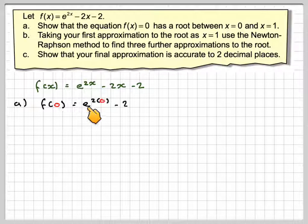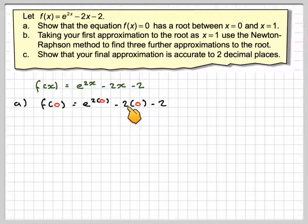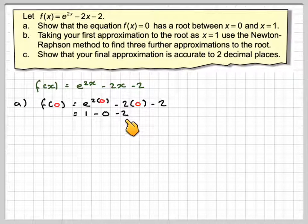So if we do f of 0, that's e to the 2 times 0 minus 2 times 0 minus 2. This becomes e to the 0, which is 1, minus 0, minus 2. 1 minus 2 gives me minus 1.